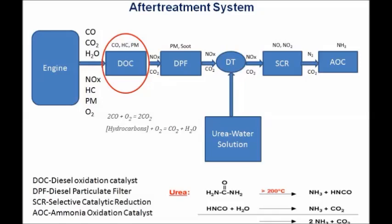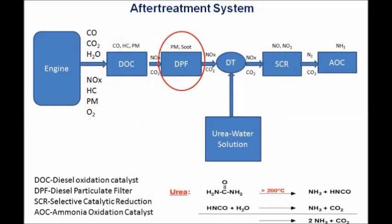NOx, carbon dioxide, along with a little amount of particulate matter and soot which came out from DOC, enters into DPF where it will undergo a regeneration process. DPF is made up of materials such as silicon carbide, cauduride, and ceramic fiber. DPF has wall flow filters where a significant amount of particulate matter and soot will get deposited, which in turn increases back pressure and fuel consumption.